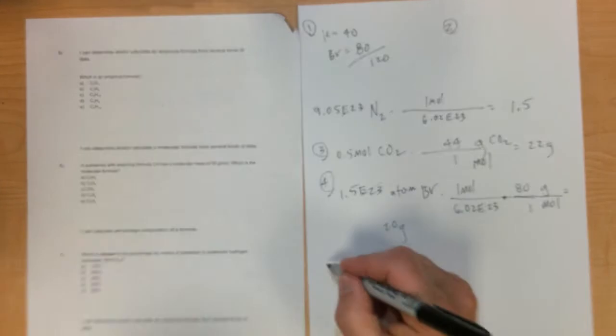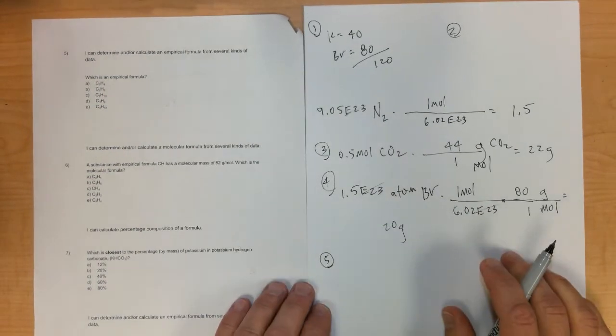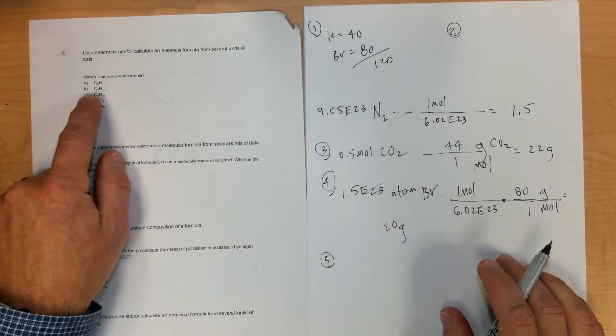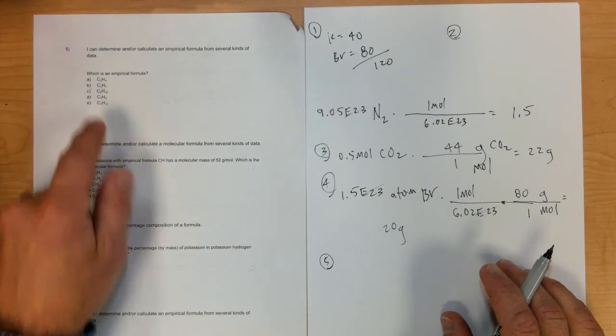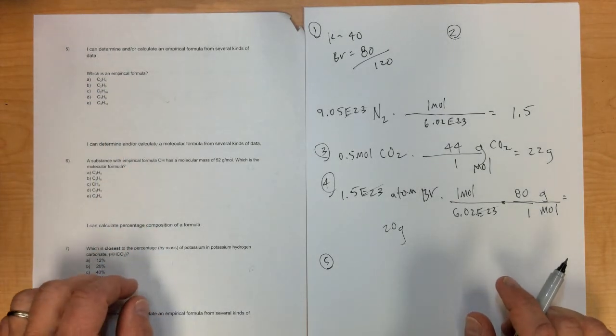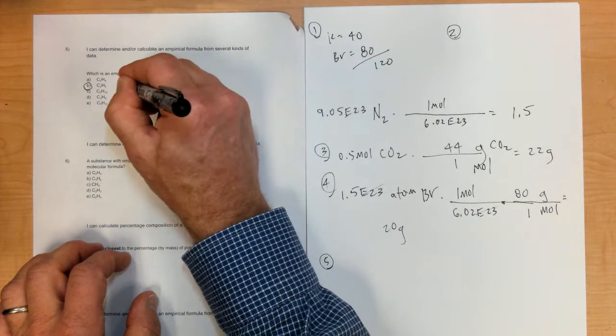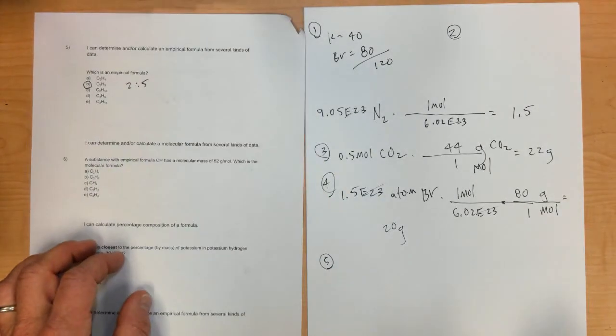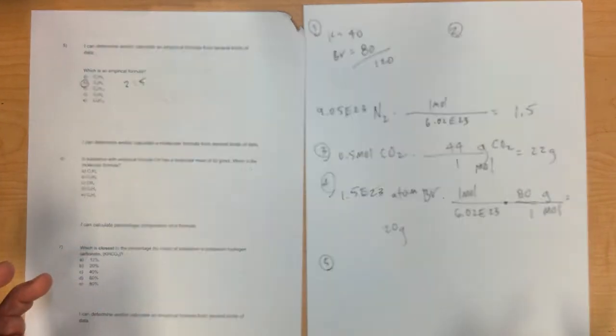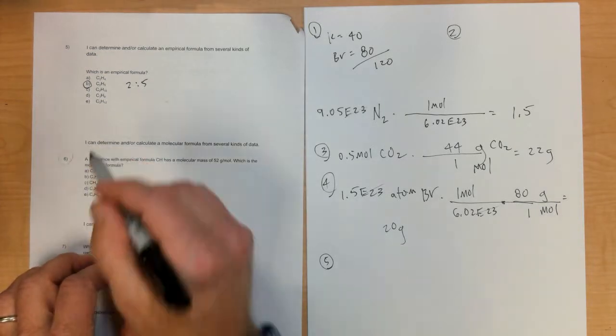Number five: which is an empirical formula? Remember, that's the simplest whole number ratio, and letter B would be a 2 to 5 ratio. You couldn't make that simpler without a fraction.